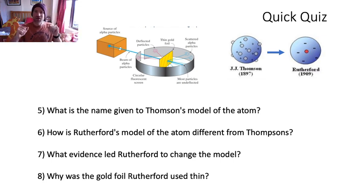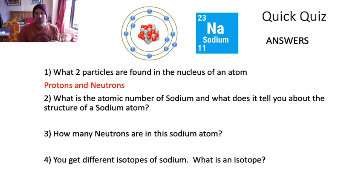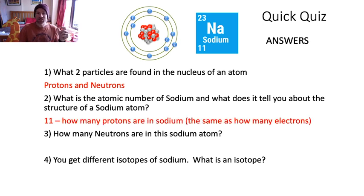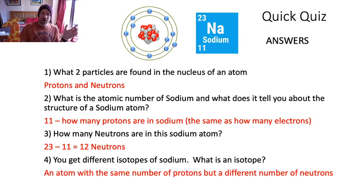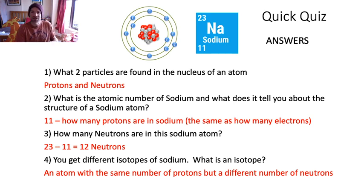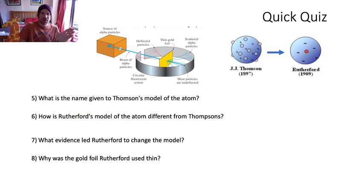Right, answers. Particles in the nucleus: hopefully you've got protons and neutrons. The atomic number of sodium is the bottom number, the number 11, and it tells you how many protons are in the sodium's nucleus - that's also the same as the number of electrons. How many neutrons? Well, we use the mass number at the top, which is 23 - that tells you there are 23 particles total in the nucleus. If 11 are protons then 12 must be neutrons.